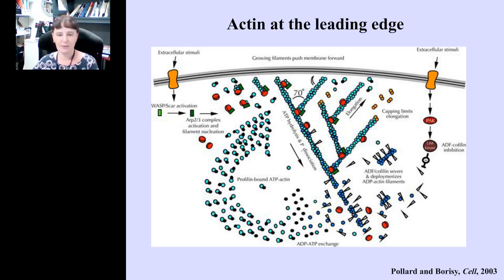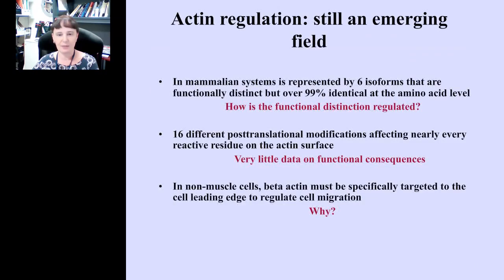There are a number of proteins and regulatory events that facilitate the activity of this leading edge actin network. Actin at the cell leading edge forms a branched network of filaments that constantly polymerize at the very cell periphery. This polymerization is the force that physically pushes the cell edge forward as the cell moves. There is a constant flux of actin subunits from the back of this network, where they depolymerize, to the front, where they repolymerize again.